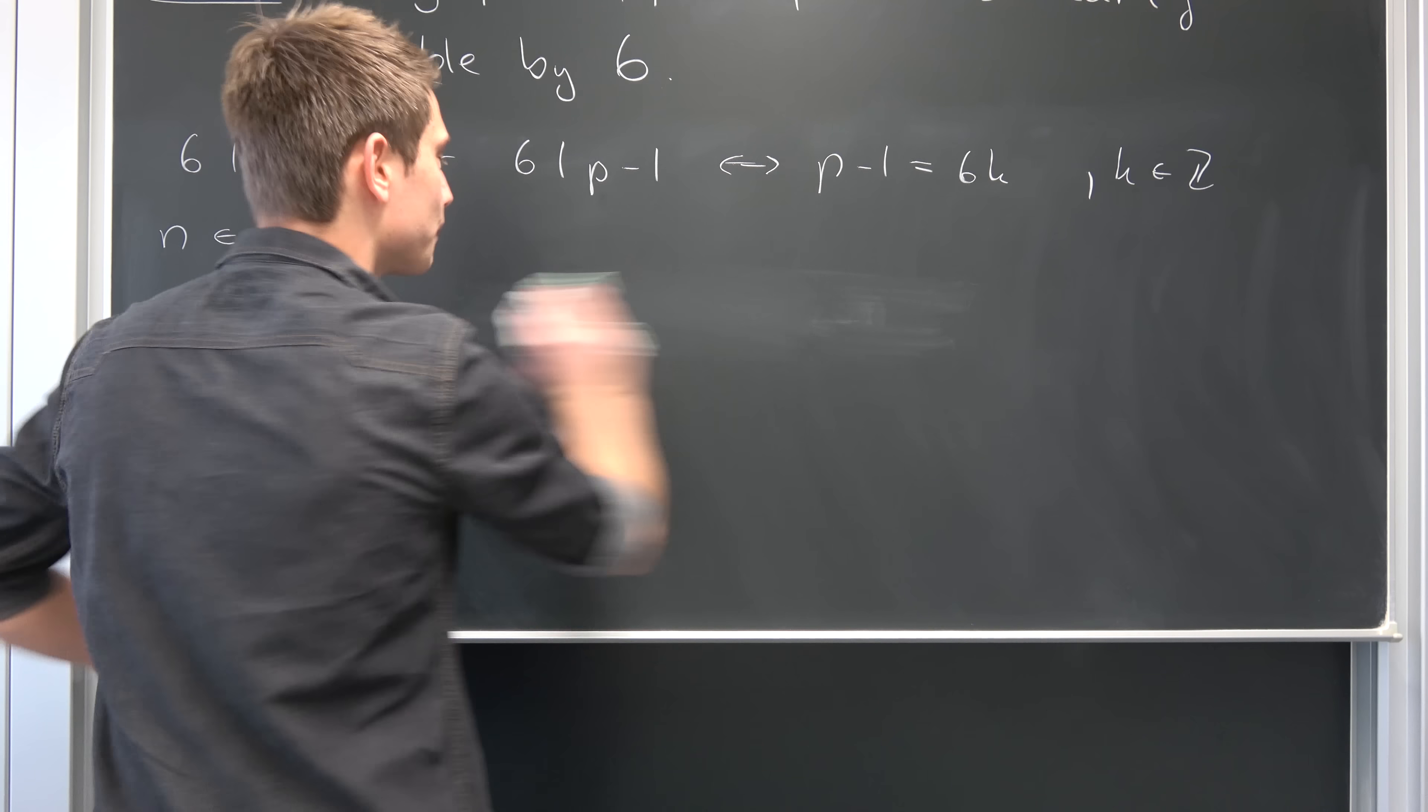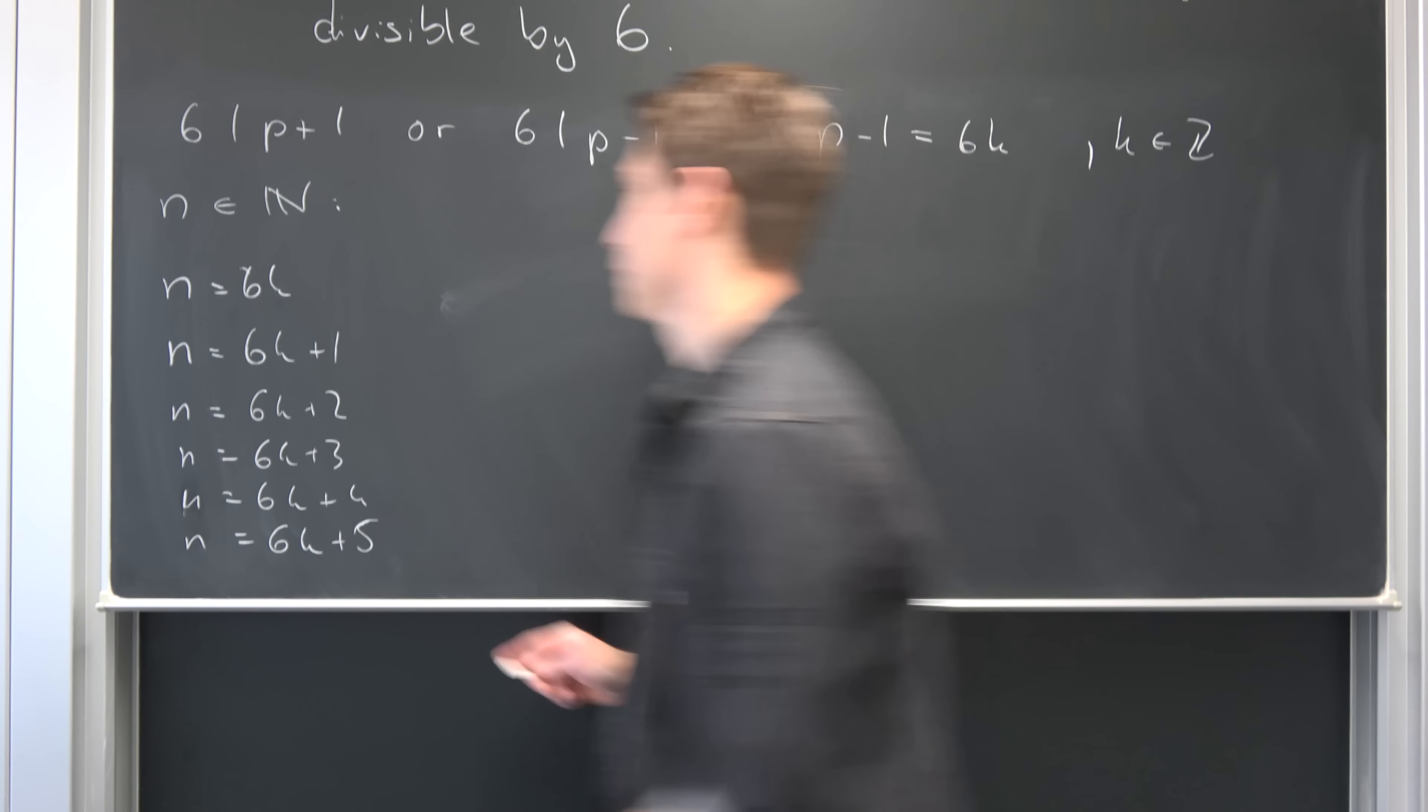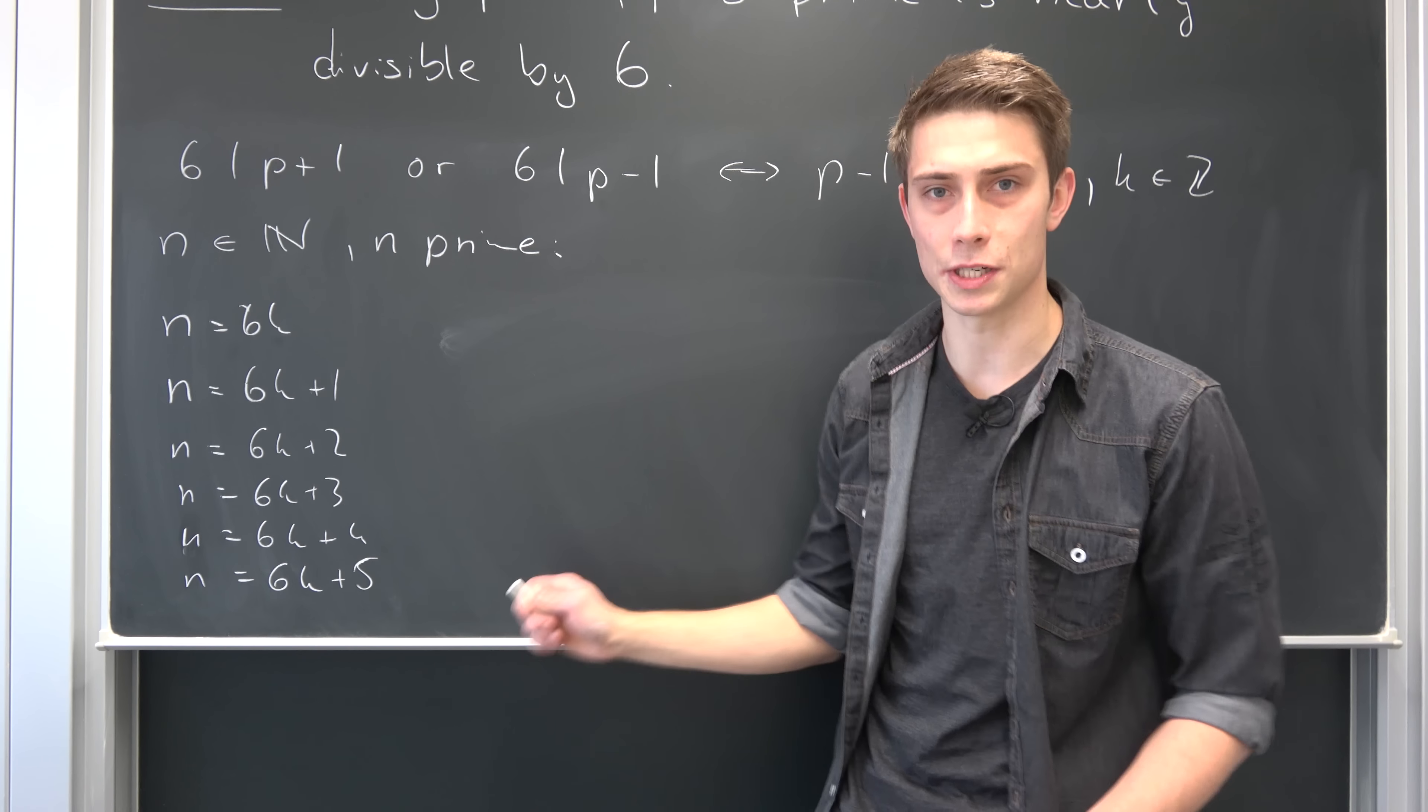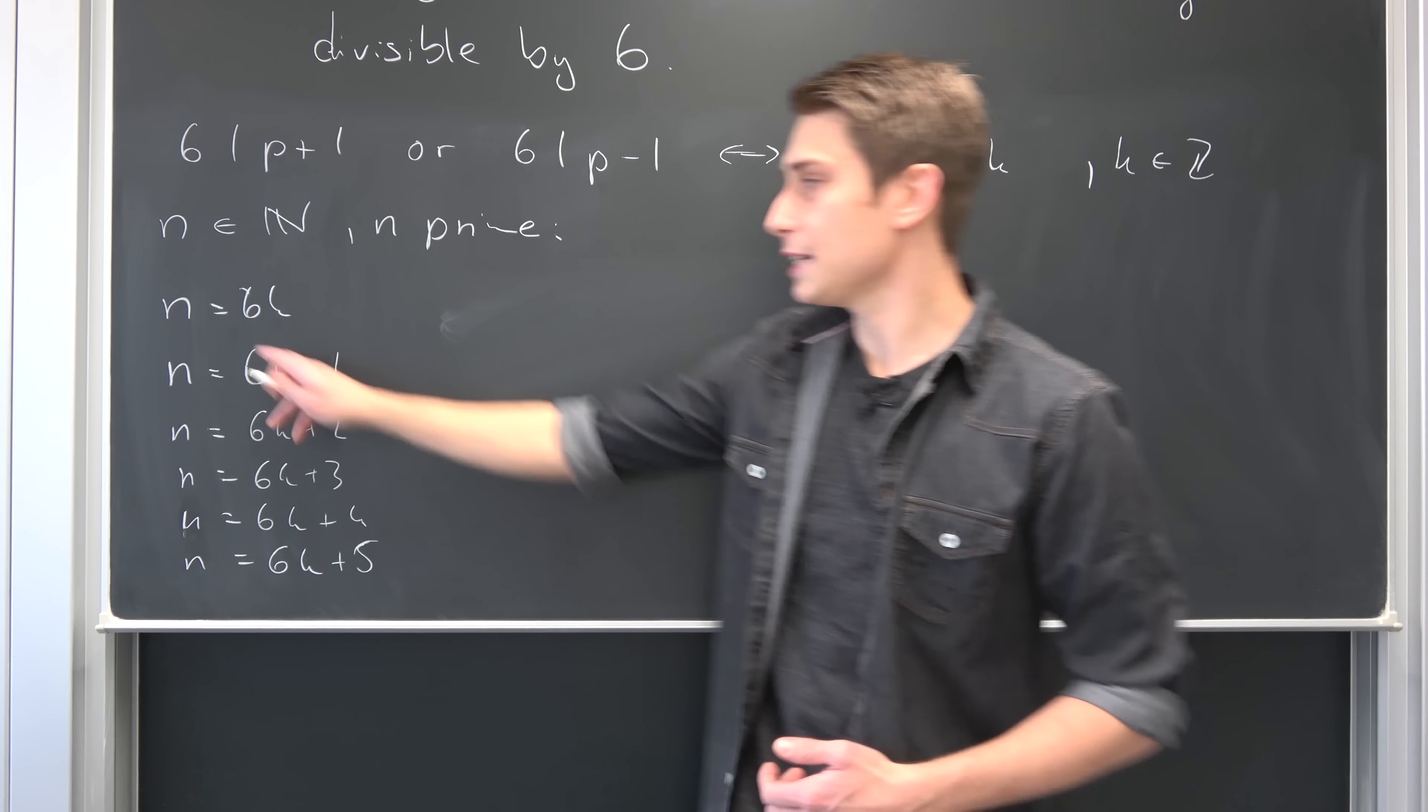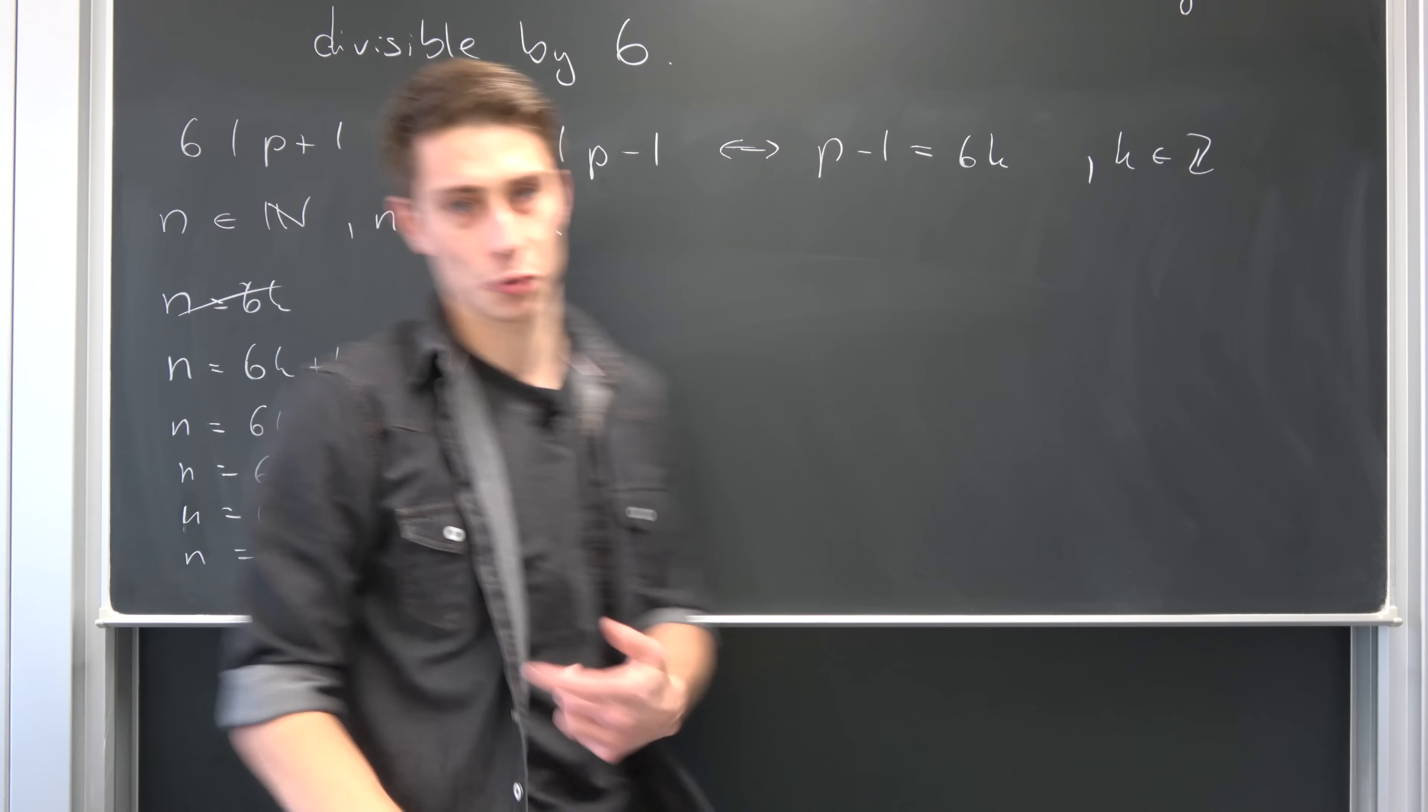Now we're going to go through all the cases, because now we want n to be a prime number. What does prime number mean? It's only divisible by 1 and itself. Well, you see right here, 6 times k, 6 divides n, so this doesn't work. This doesn't correspond to a prime number.